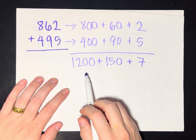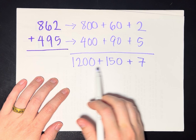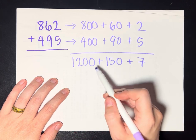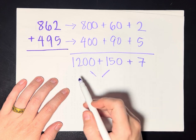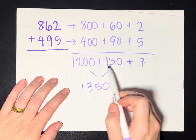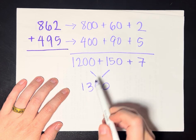And now what I want to do is add together all the stuff that I have, 1,200 plus 150 plus 7. Maybe I'll add these ones together first and get 1,350. So I have 1,200 and 1 more 100, that makes 1,300.